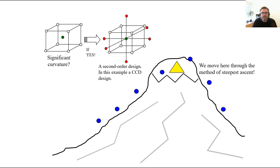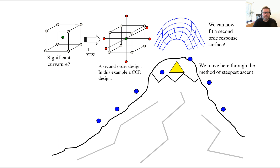If significant curvature is detected, a second order design is needed. A central composite design can be built sequentially from the first design by adding axial or star points. Through this second order design and its fitted model, we can explore and describe the hill of the mountain in this area. This is basically what we are doing in RSM: a sequential procedure to climb the mountain and minimize or maximize a response of interest. Thank you for listening and see you next time. Bye bye.